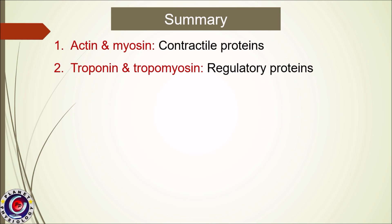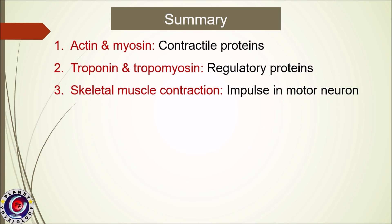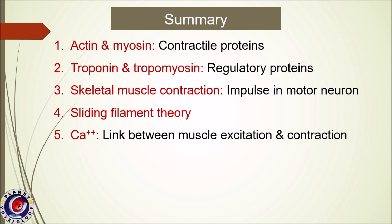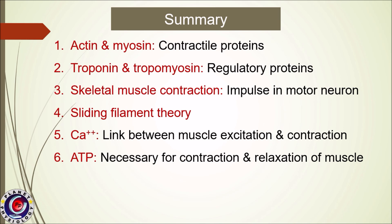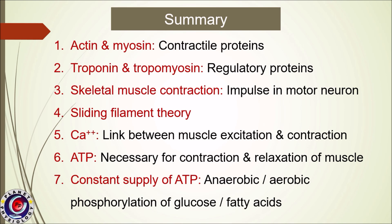Here is a quick summary of muscle contraction. Actin and myosin act as contractile proteins in the muscle, whereas troponin and tropomyosin are regulatory proteins. Skeletal muscle contraction is initiated only in response to impulses in the motor neuron. The theory for muscle contraction is called the sliding filament theory. Calcium ions act as the link between muscle excitation and its contraction. ATP is necessary for both contraction and relaxation, and constant supply of ATP is maintained by either aerobic or anaerobic processes.